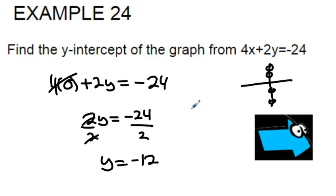What this actually means is when the x-coordinate is 0, there's a y-coordinate at negative 12. So that's going to be somewhere down here where the y-intercept is going to be.